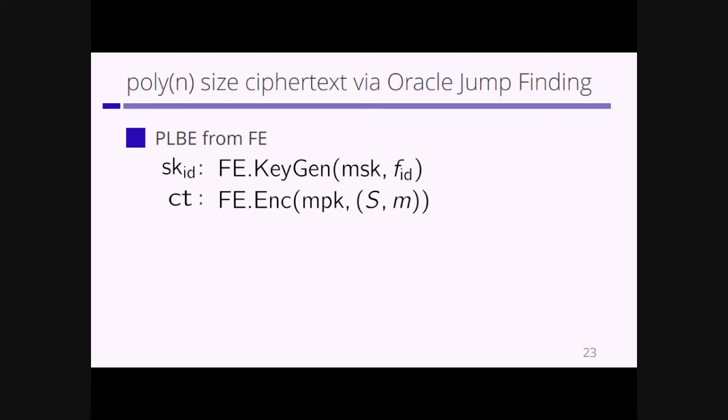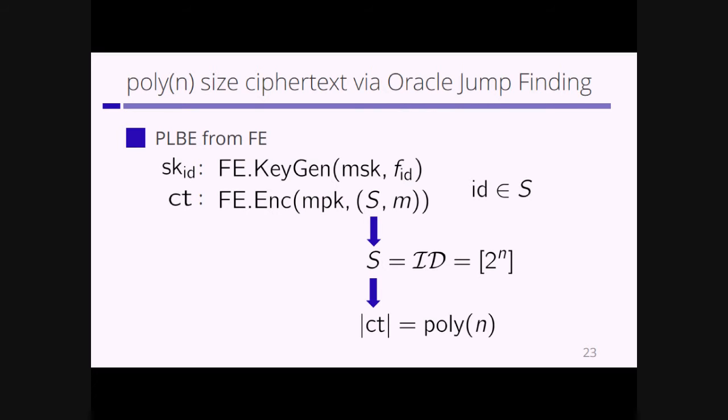Regarding efficiency: we use functional encryption to achieve PLBE. The secret key for identity is the functional encryption secret key for function f_id, and the ciphertext is a functional encryption ciphertext encrypting a set S and plaintext M. If the identity is in this set S, the functional encryption algorithm outputs plaintext M. We set S as the whole identity space 2^n, so we need n bits to describe S, making the ciphertext size of our scheme polynomial in small n.